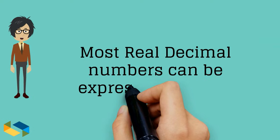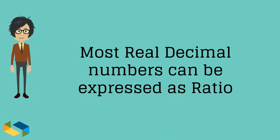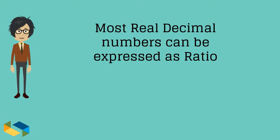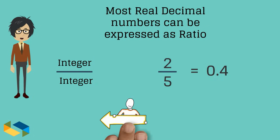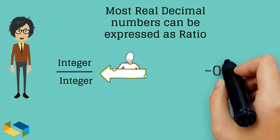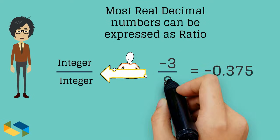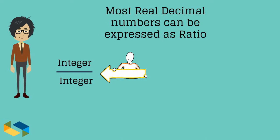Now most of the real decimal numbers can be expressed in form of a ratio. What I mean by this, is that the number can be written as a ratio of 2 integers. Of course, the denominator cannot be 0. For example, 0.4 can be written as a ratio of 2 upon 5. Minus 0.375 is minus 3 upon 8. Also, 2.333, where the decimal 3 keeps repeating forever, can be expressed as 7 upon 3.